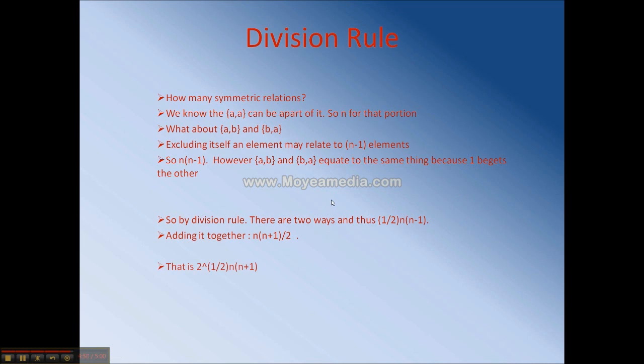And if we want to figure out how many total relations, we know that each one of these relations could or could not exist, so that gives us two to the one half n times n plus one.